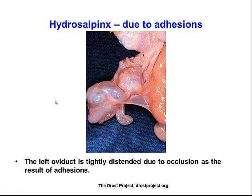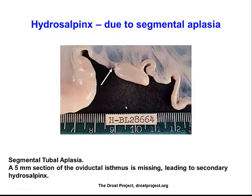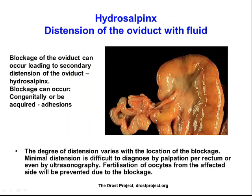Hydrosalpinx is an abnormal accumulation of fluid within the oviduct, usually associated with some sort of blockage somewhere along the oviduct. This might be due to an adhesion or congenital agenesis or aplasia of a particular region of the oviduct. In this case, part of the oviduct is congenitally missing, causing fluid build-up near that region. In another example, you see distention of the oviduct with fluid as a result of blockage, probably due to scar tissue and adhesions. Sometimes you will feel that on rectal palpation.